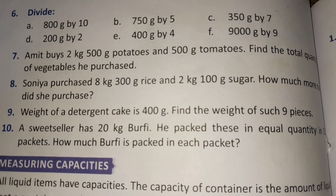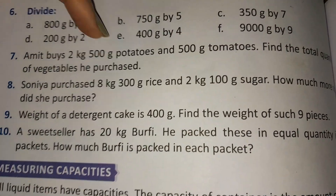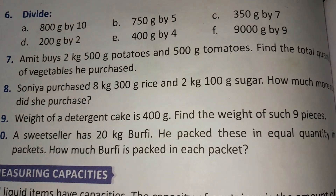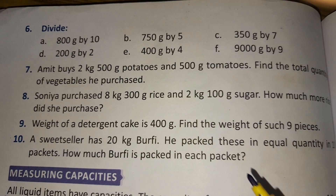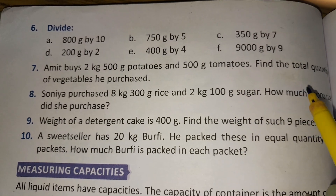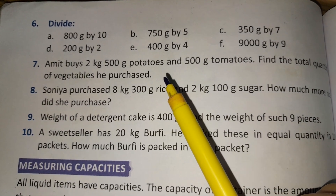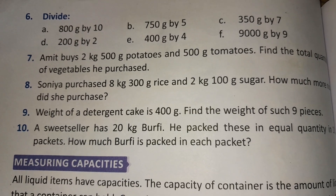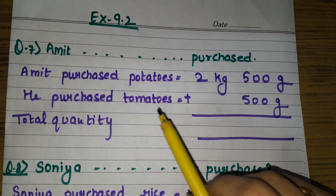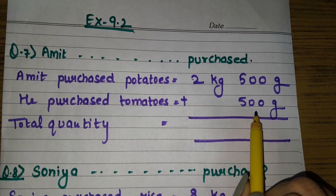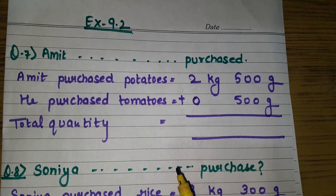Exercise 9.2 question number 7, page number 128: Amit buys 2 kg 500 grams potatoes and 500 grams tomatoes. Find the total quantity of vegetables he purchased — we need to find the total kg of vegetables bought. Amit purchased potatoes: 2 kg and 500 grams. He purchased tomatoes: only 500 grams.